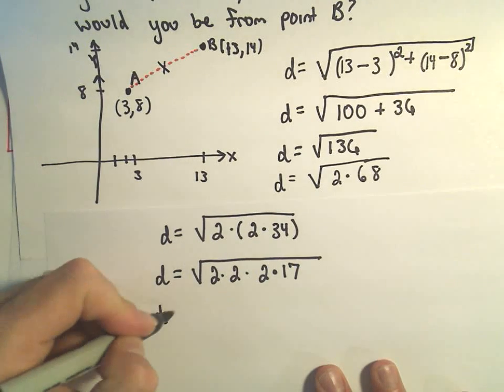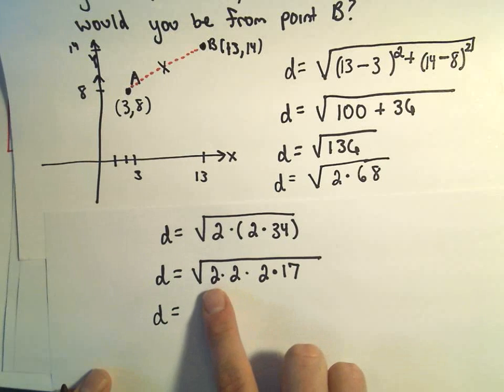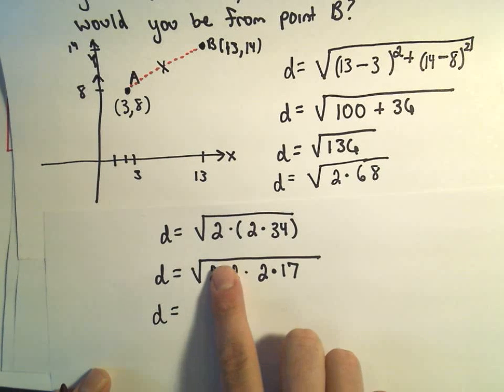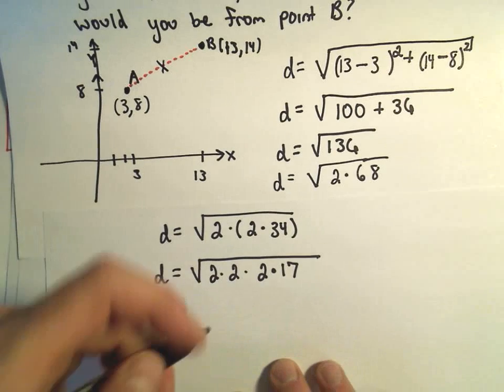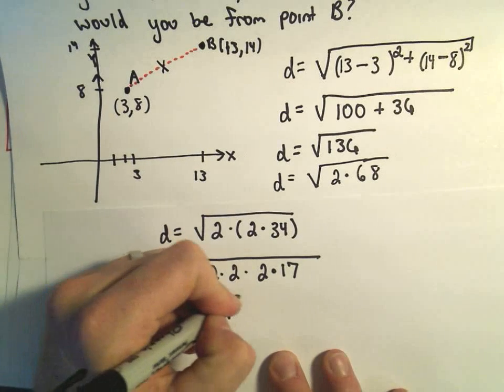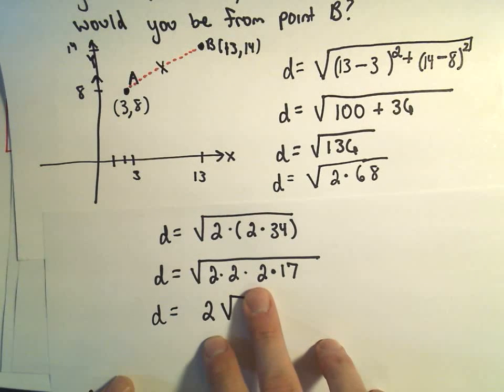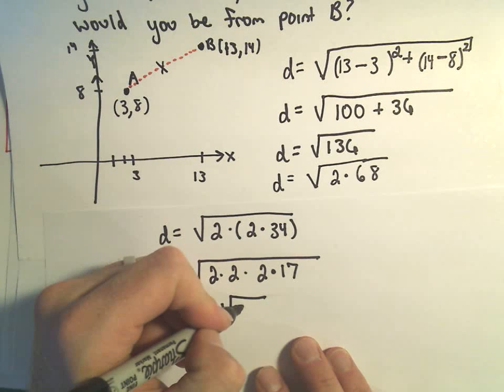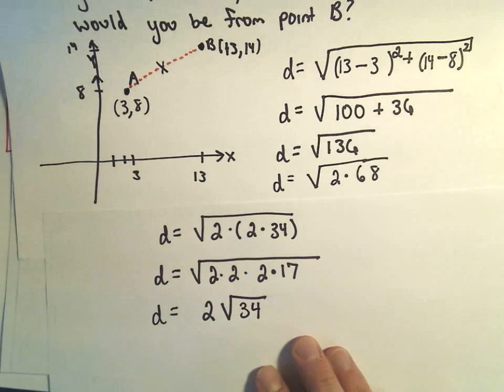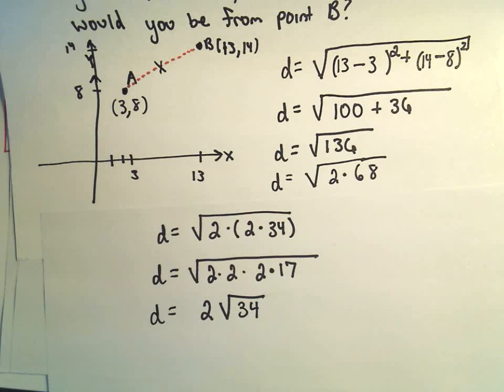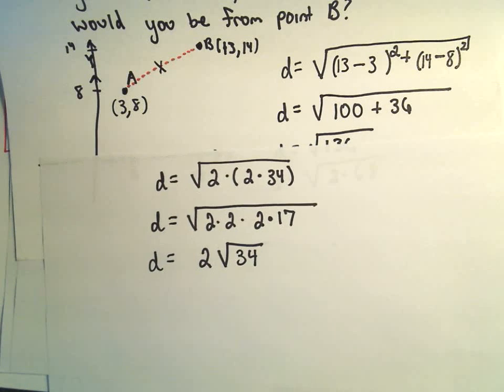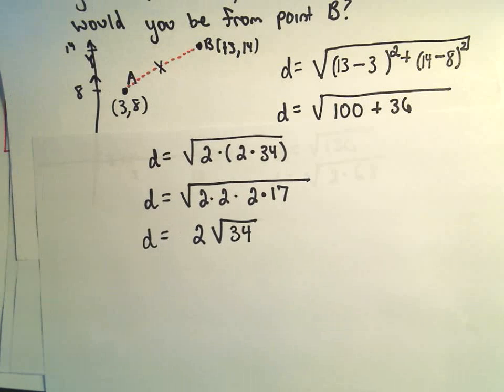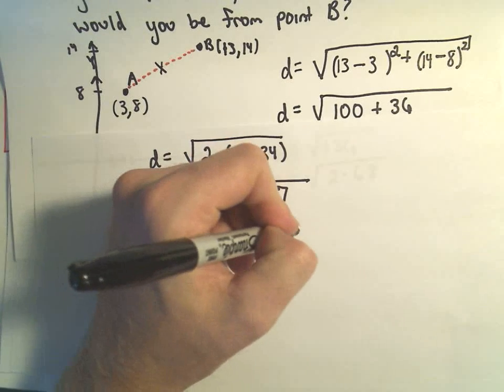Now 17 doesn't factor any further. To simplify underneath the square root, since we've got 2 times 2, that's a 4, we can pull out the square root of 4 as our 2. Since we can't really take the square root of 2 or the square root of 17, we can just leave the 2 times 17 underneath there, which I'm just gonna go ahead and multiply it back together as the square root of 34. So that's the distance from A to B, which is 2√34.